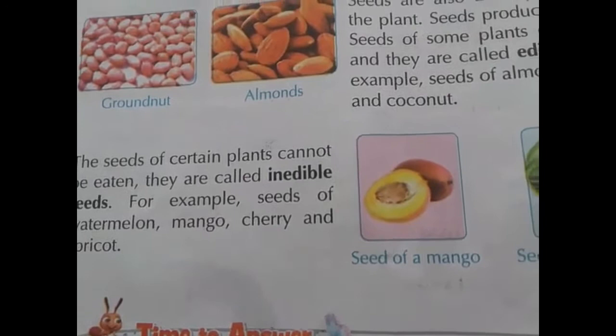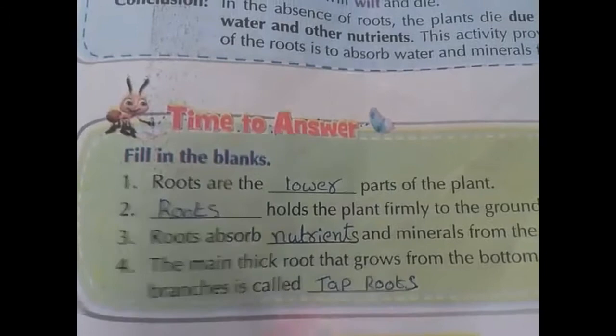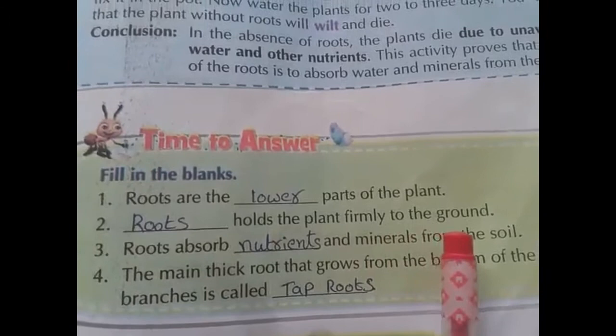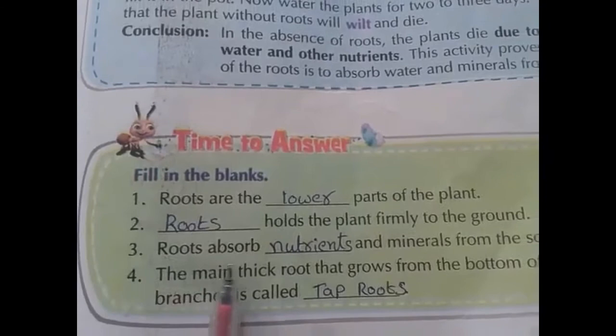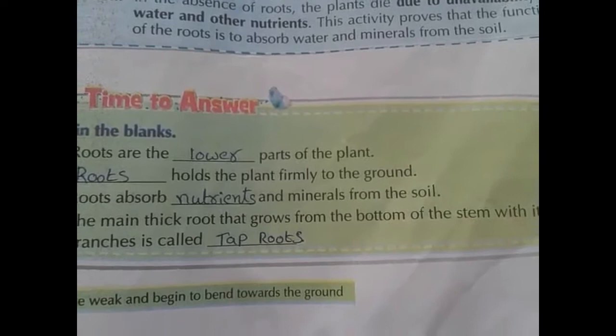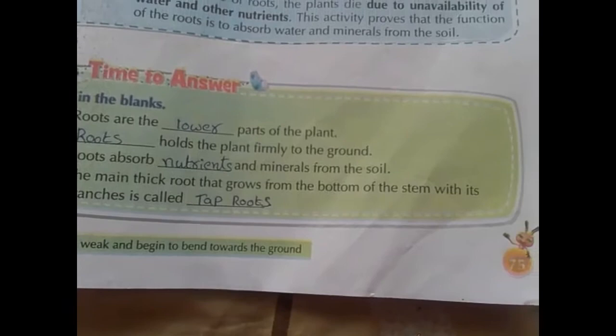Now we are going to answer some blanks in our book. Open your term book to page number 75. Roots are the lower parts of the plant. Roots hold the plant firmly to the ground. Roots absorb nutrients and minerals from the soil. The main thick root that grows from the bottom of the stem with its branches is called tap roots.